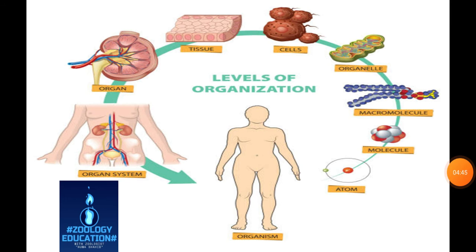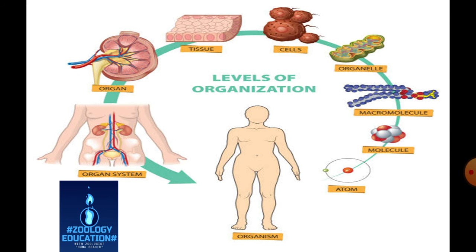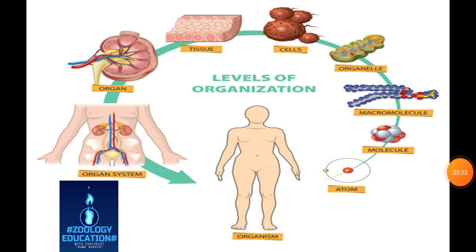Before starting these subheadings, I want to teach through this simple slide showing the levels of organization. The smallest unit of life is an atom, which combines with other atoms to form molecules. These molecules are then formed into macromolecules, which form organelles. These organelles then form a cell. A cell combines with other cells to form tissue. These tissues form an organ, and organs working together form an organ system. This was an easy way for students to understand.